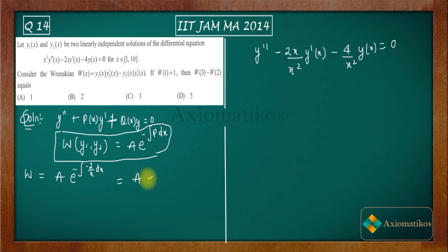So what you will end up with? You will end up with 2 log(x). So now what you can do: you can write this as A e to the power log(x²). Now what do you know about e to the power log? e to the power log is the function itself, so you will get A x². Now it's given to you in the question that W(1) equals 1.